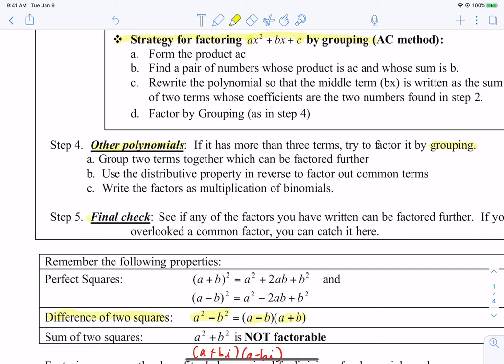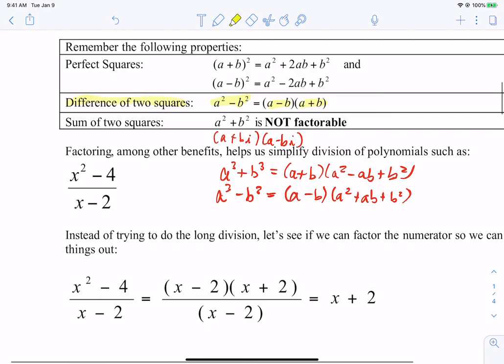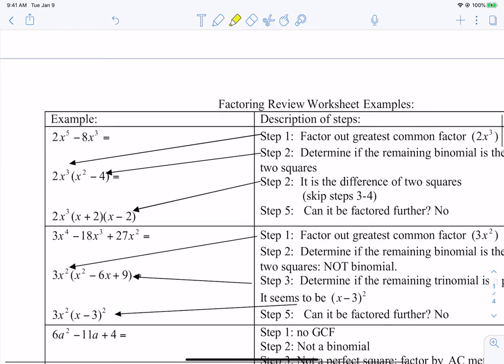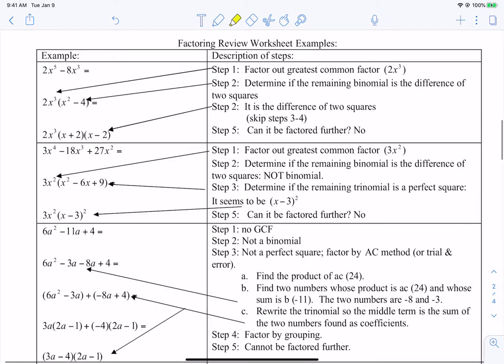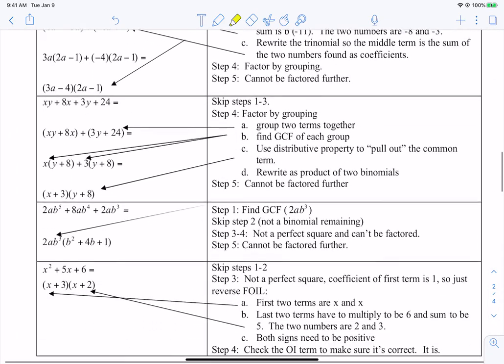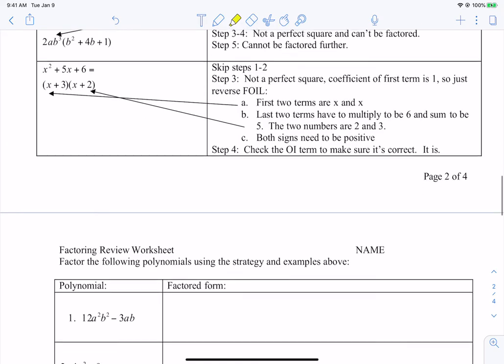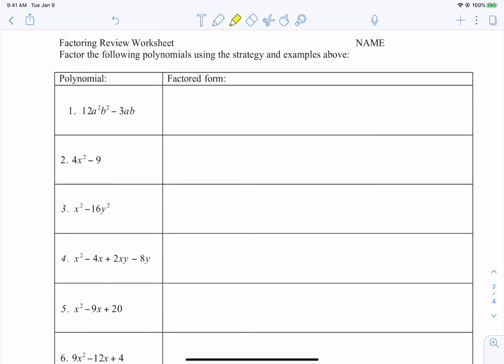If it has more than three terms, there might be a strategy called grouping, and we will talk about that. And then step five, they said final check. What you have in your final problem, you should always check, hey, can I factor it one more time? Look at that front page. It can be helpful as far as some of the things you can look at. Here are some examples of factoring. They've kind of gone through and gone through different steps.